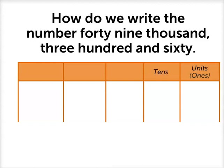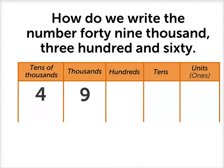Units, tens, hundreds, thousands, and tens of thousands. This time we have 49,000. That means there are four tens of thousands and nine thousands.